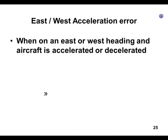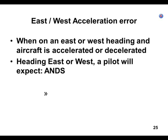East-west acceleration error: when you're on an easterly or westerly heading and the aircraft accelerates or decelerates, ANS — if you're accelerating, the compass is going to look like it's turning towards north. If you're decelerating on an east-west heading, the compass is going to look like you're turning towards south. UNOS is what you have to do; ANS is what you see.